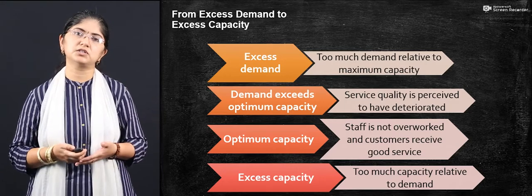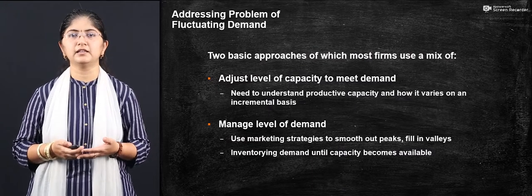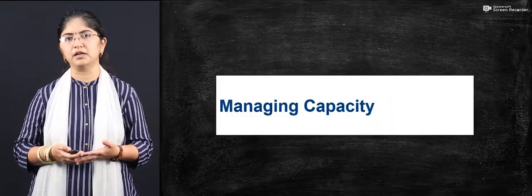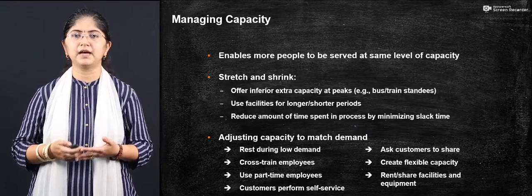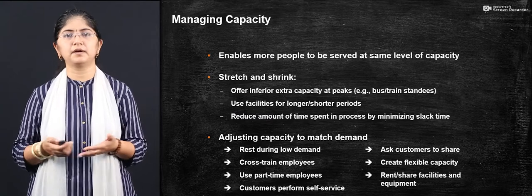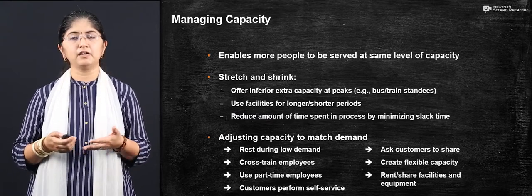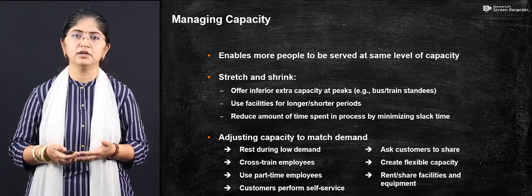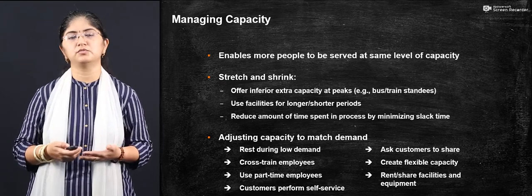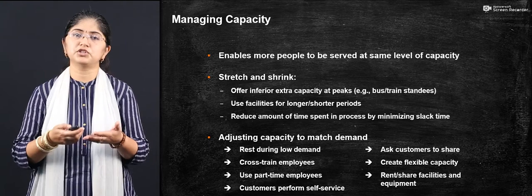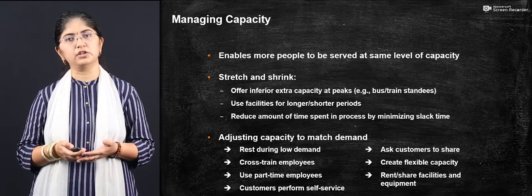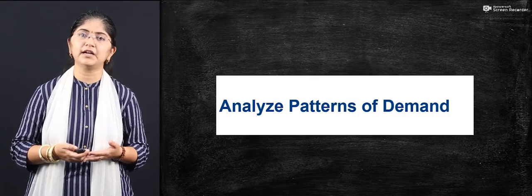After understanding this, how do you manage these fluctuations? As a marketer you have two options only: manage the capacity, and manage the demand. To manage capacity, you can shrink or stretch the capacity to adjust with the demand. You can offer rest during long hours or low demand periods, use cross-training or cross-employing staff, use part-time employees, offer customers a self-service concept, allow customers to share services, offer flexible capacity, and even rent or share facilities to match demand.